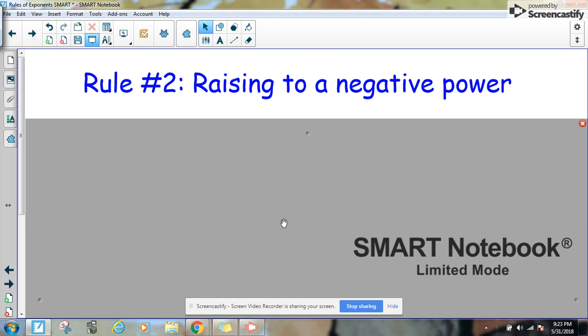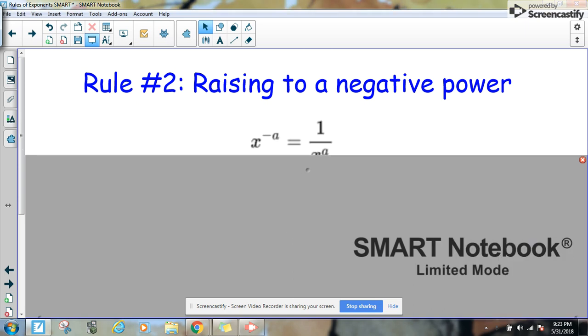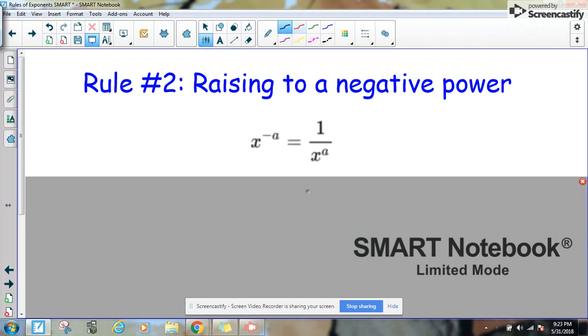The next rule we're going to talk about is raising things to negative powers. Let's remember that even if there's nothing on the denominator, we can always assume that there's a 1 on the denominator to make that into a fraction.